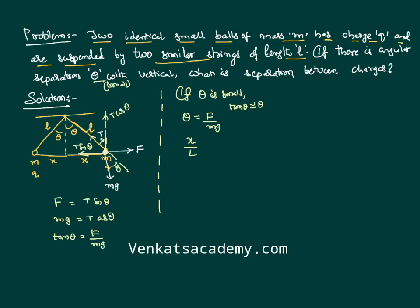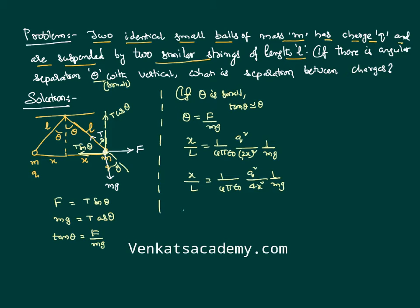We can also write theta as x divided by L from the geometry. F is given by Coulomb's law: (1 / 4π epsilon₀) times q² divided by (2x)², which simplifies to q² divided by (16π epsilon₀ x²). Substituting into theta equals F over mg gives x over L equals q² divided by (16π epsilon₀ x² mg).